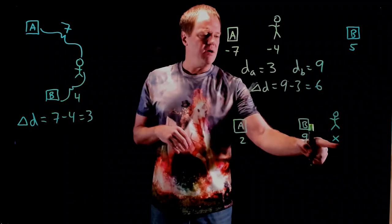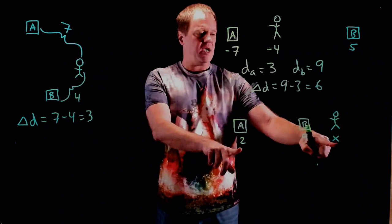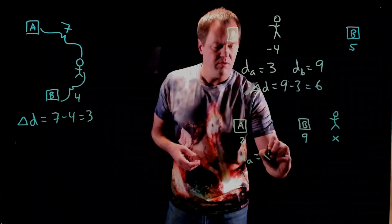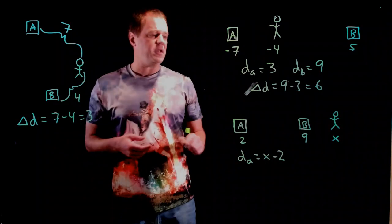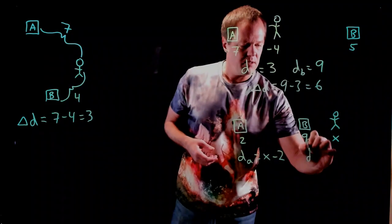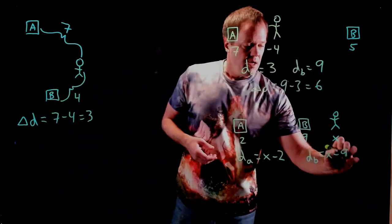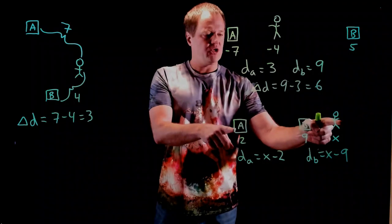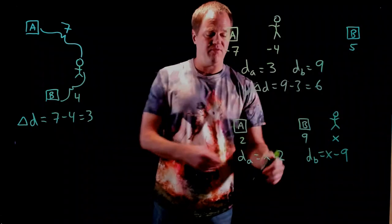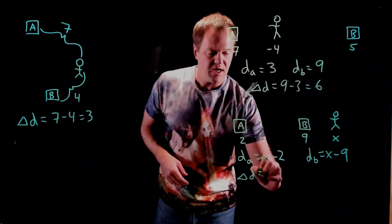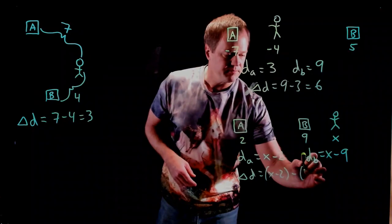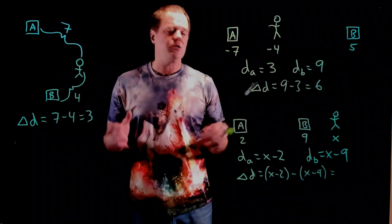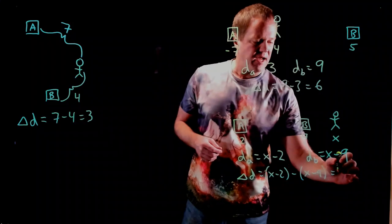So distance to A will be x minus 2. If this was, say x was 12, you'd be 10 meters away. So in terms of symbolic solution, distance to A would be x minus 2, and then distance to B would be x minus 9. Next step is to subtract. You always want to take the bigger minus the smaller. The observer is further away from A, so we'll put this one first when we're subtracting. So delta D will be x minus 2 minus x minus 9. And it turns out that the x's cancel out. So it actually doesn't matter in this particular case where the observer is, and we end up with an answer of 7.